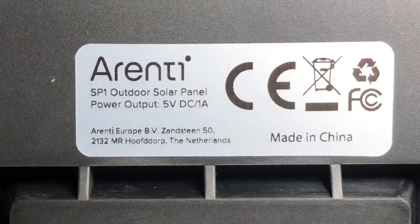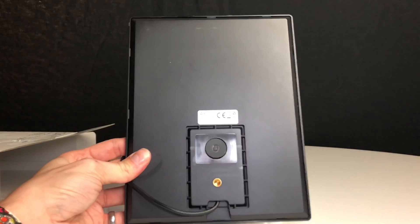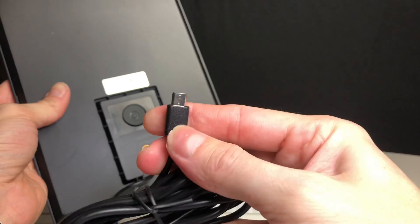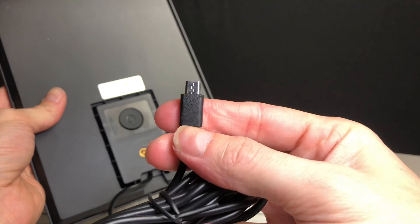This panel has an output of 5 volts 1 amp. This solar panel does work for many other cameras but do make sure that 5 volts 1 amp will work for your battery camera.